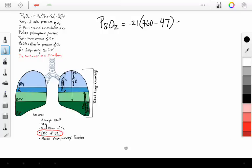which is 47 millimeters of mercury, minus your average CO2, which is 40, over your average respiratory quotient, which is 0.8.